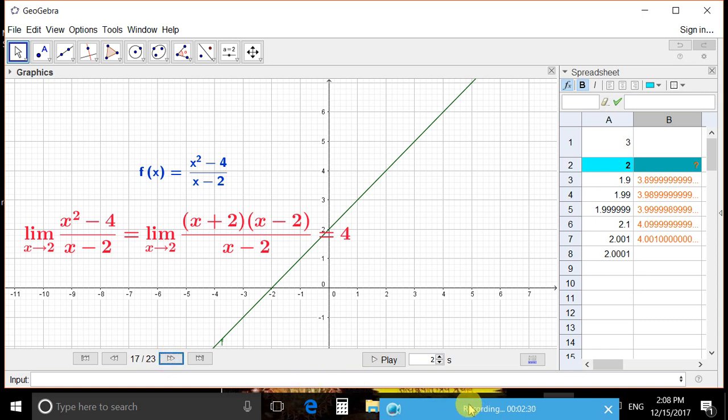And at 2.001, it will be 4.001. Again, when it is going very close to x = 2, f(x) goes to 4.